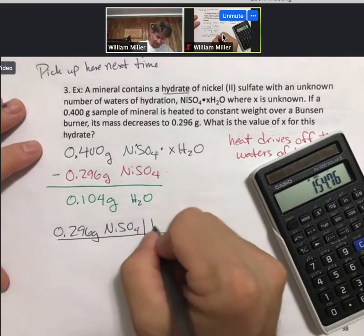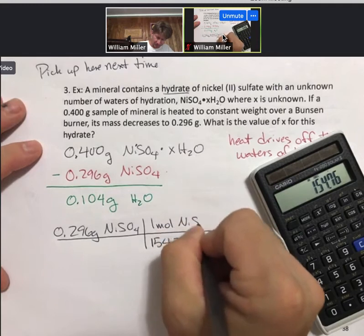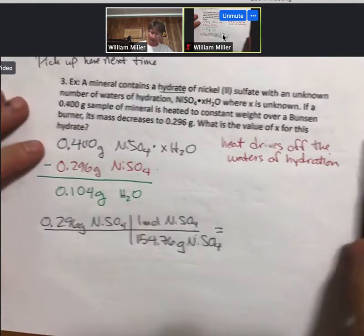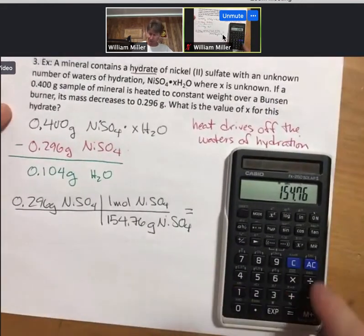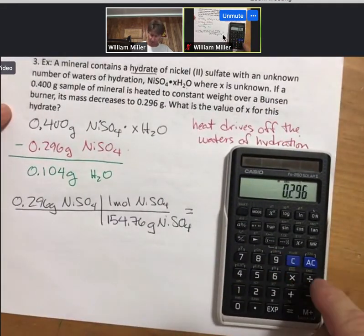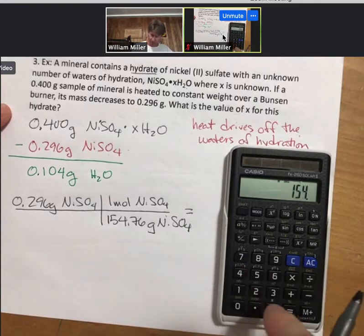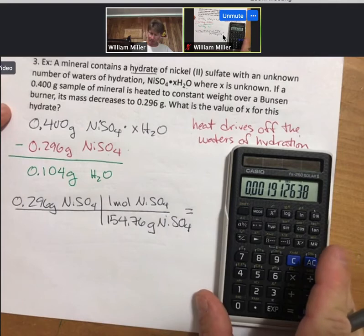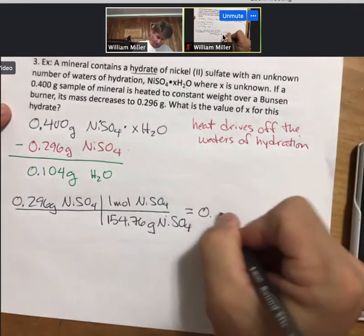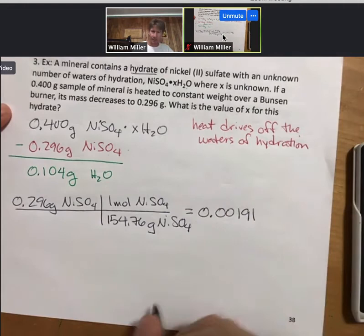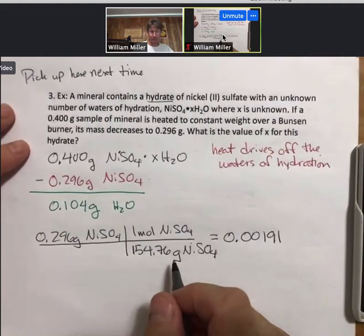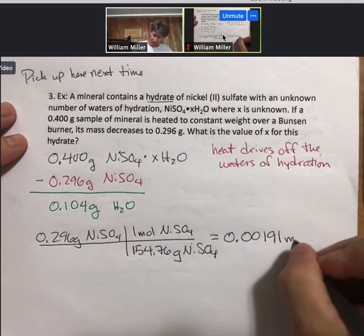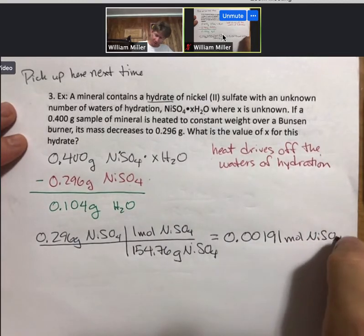Let's go ahead and do this: 0.296 grams divided by 154.76. I get 0.00191, and those units will be moles of nickel(II) sulfate.